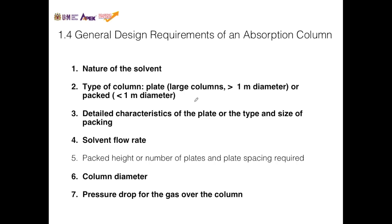Number two is the type of column. If we are planning to treat gas in large amounts, we would use a plate column if the column diameter is more than one meter. But if it's less than one meter, which also means the amount of gas that can be treated is small, then we can use the packed column.